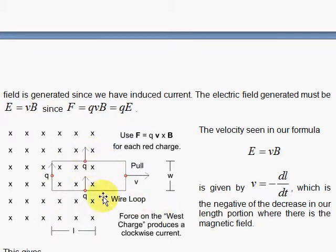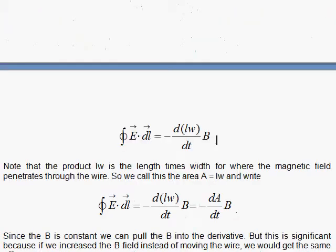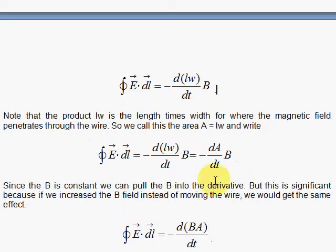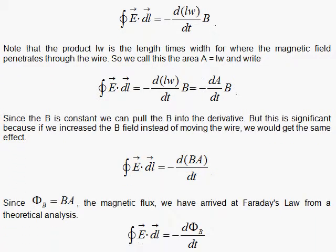So that's the definition of the flux, LW times B. So let's look at that down here. And if we look at LW, the area, dA dt, if we bring the B inside, we have then the flux, the change of the flux, and we have our final form.